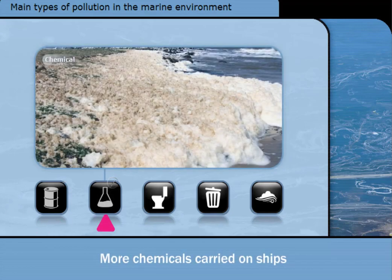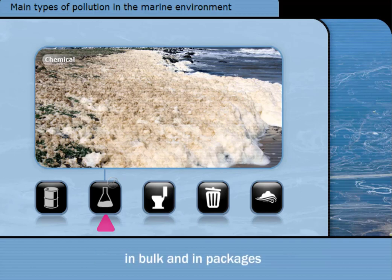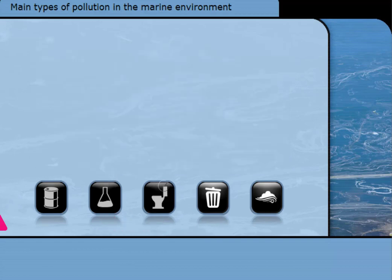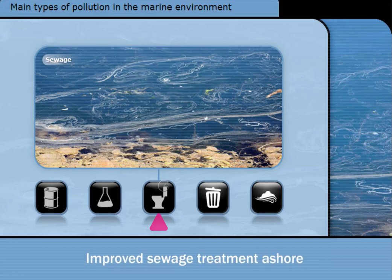Chemical pollution of the sea had become a problem by the 1970s, because the increasing volumes of chemicals being used required their carriage by ship, both in bulk and in packaged form. Some of these cargoes entered the sea following accidents, or as routine operational pollution after tank cleaning. Sewage pollution from ships became a problem, as improved sewage treatment ashore made sewage from ships more obvious.